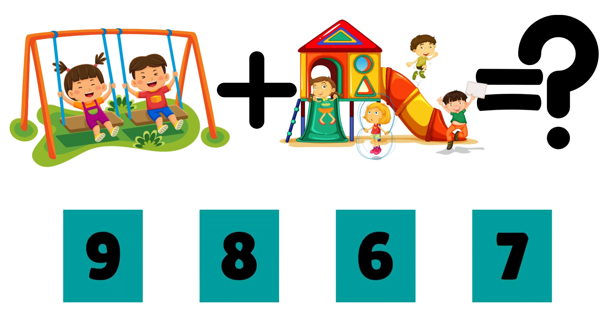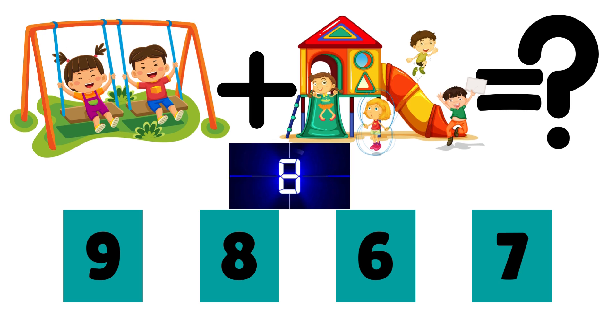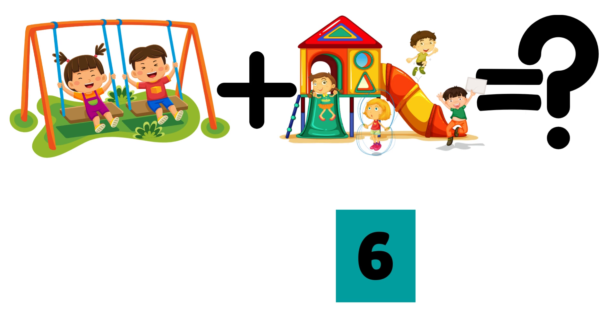Look at the playground. There are two kids on the swings and four more on the slide. How many kids are playing all together? The answer is six. Two plus four is equal to six. Playtime math is so much fun!